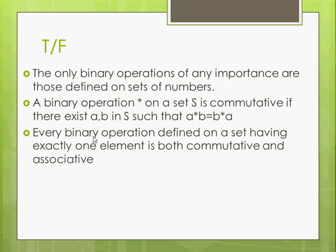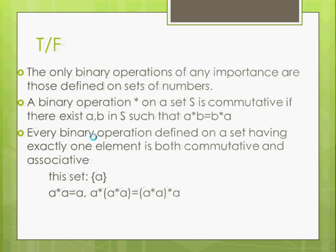So every binary operation defined on a set having exactly one element is both commutative and associative. Well, if there's only one element, and this is what's really cool about modern algebra. You have these interesting scenarios that they give you. And you have to figure out how to use that information. So this set is just one element. And if it's a binary operation, it's closed, isn't it? Because that's how a binary operation is defined. So if it's closed, then A star A must equal an element in the set, which the element in the set is A. And so A star A equals A star A star A. So it is associative, and it's also commutative.